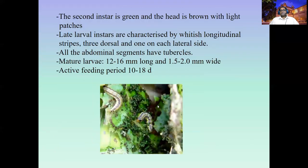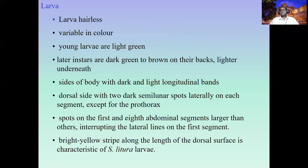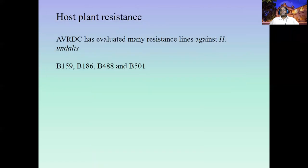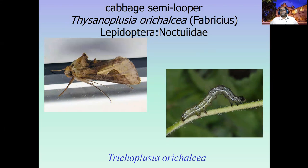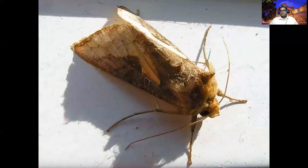In Trichoplusia orichalcea, you can see a slight color change — it's a brownish color with some blackish areas. Sometimes the white markings are replaced by spines, so there is a slight modification. It is very confusing in the early larval stages, but in the later stages you can differentiate them by color.